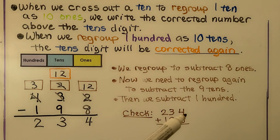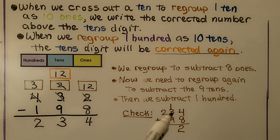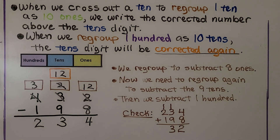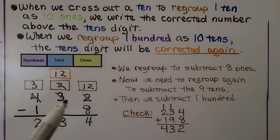We add eight plus four, which is twelve. We regroup one ten and put two ones in the ones place. Now we add the tens — nine and one makes ten, then we add three and have thirteen tens. We regroup ten tens as one hundred and put the remaining three tens in the tens place. Now we add the hundreds: two, three, four. The sum is four hundred thirty-two, which is our minuend. We know we did our subtraction correctly.